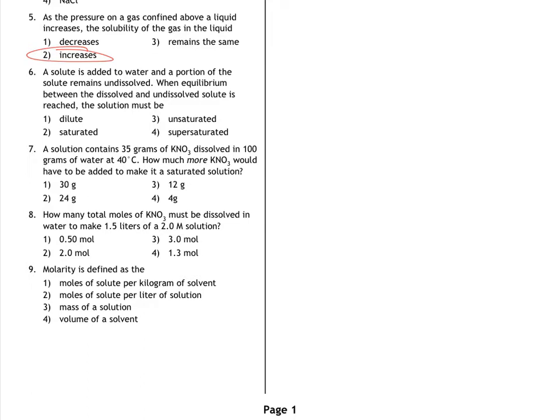A solute is added to water, and a portion of the solute remains undissolved. When equilibrium between the dissolved and undissolved solute is reached, the solution must be blank. So if some of it remains undissolved, that is a hint that you have a saturated solution. But also, when they use the word equilibrium, that's also a hint that you have a saturated solution. So my answer for this one is saturated.